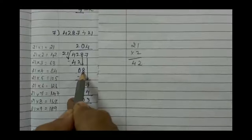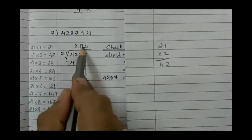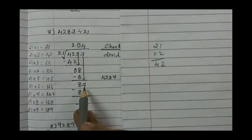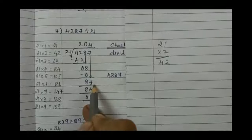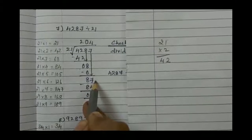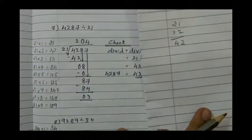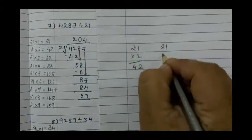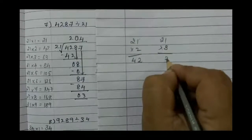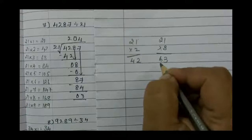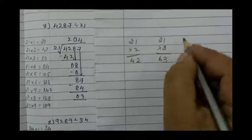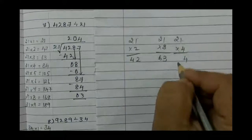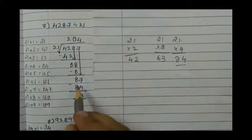It's not possible by single digits, so multiply again. 21 into 0 gives 0, you get 8 below. Bring the neighbor, that's 7. 8 and 7 becomes 87. When do we get 87 in table 21? Let's check: 21 into 3 gives 63—no, too small. Let's try 4. 21 into 4: 4 times 1 is 4, 4 times 2 is 8. We need 87, now we got 84.